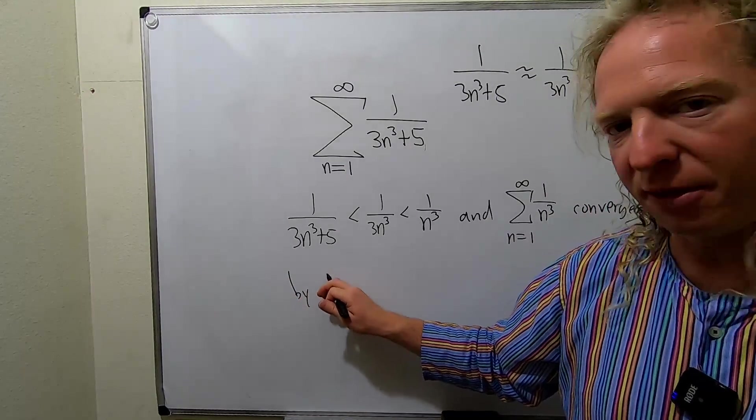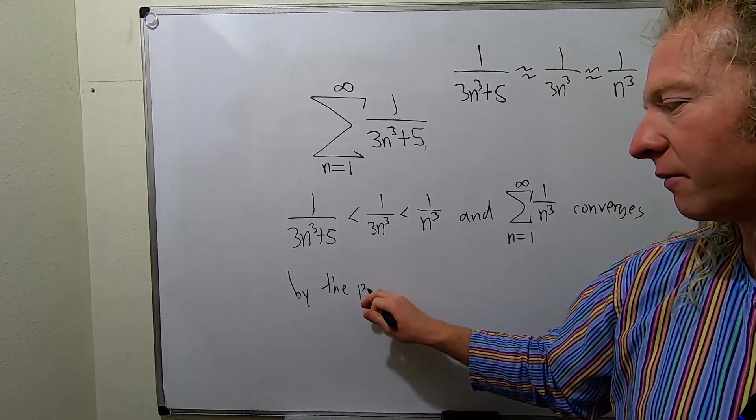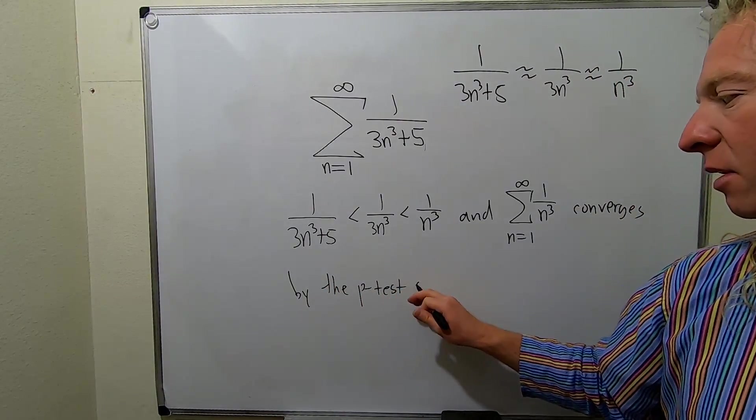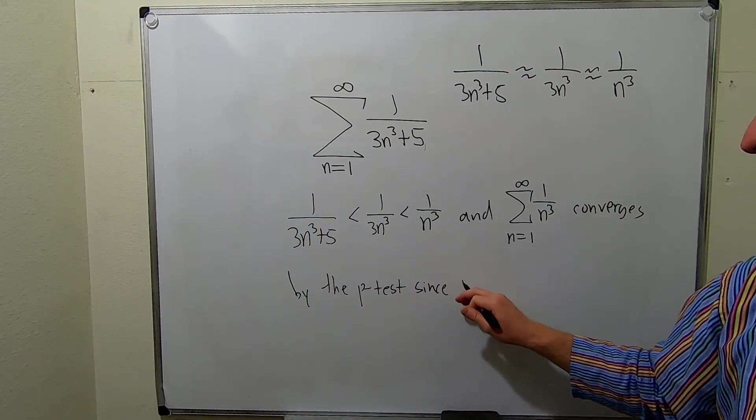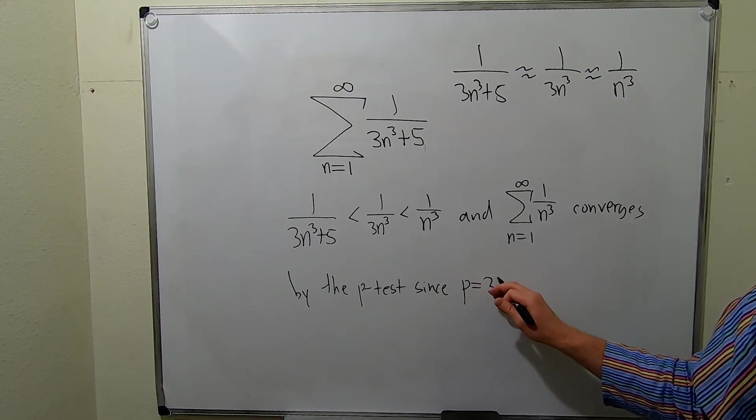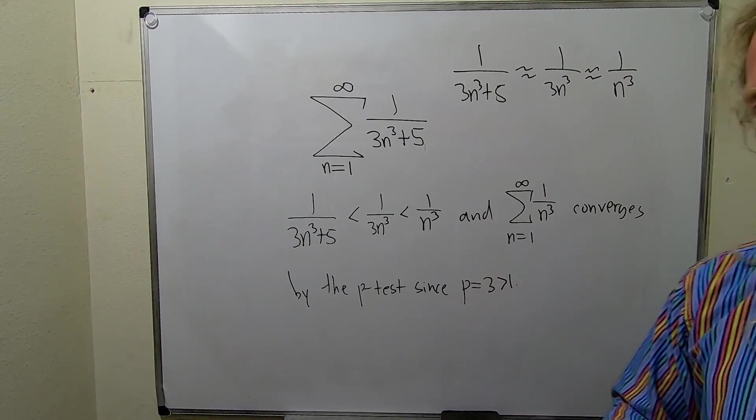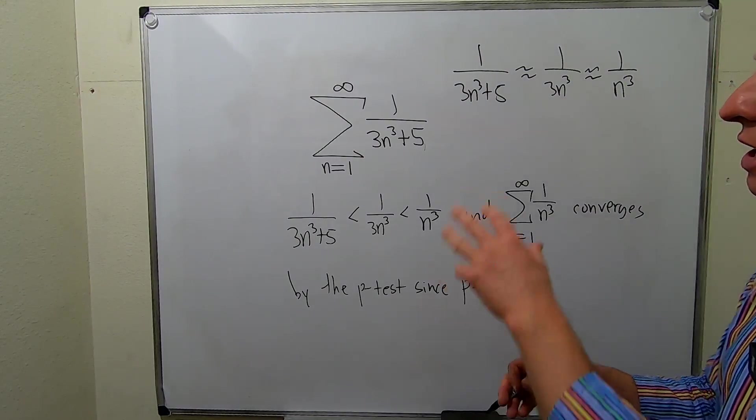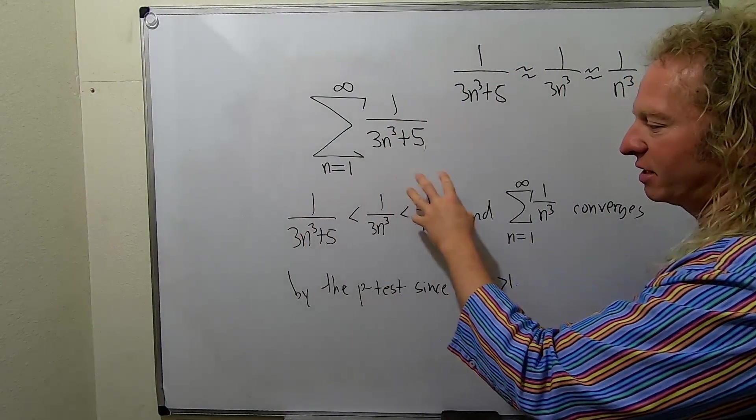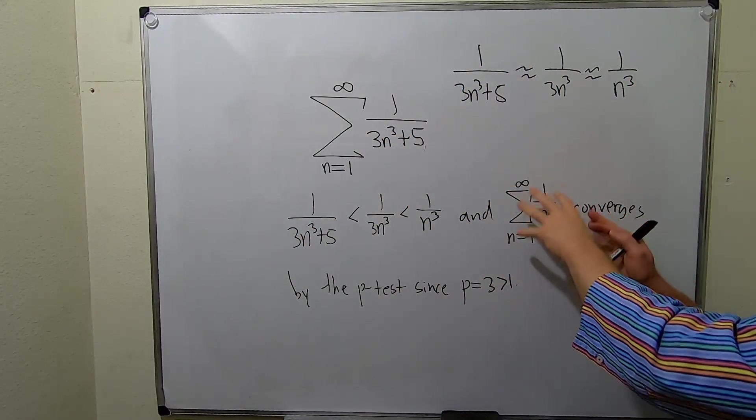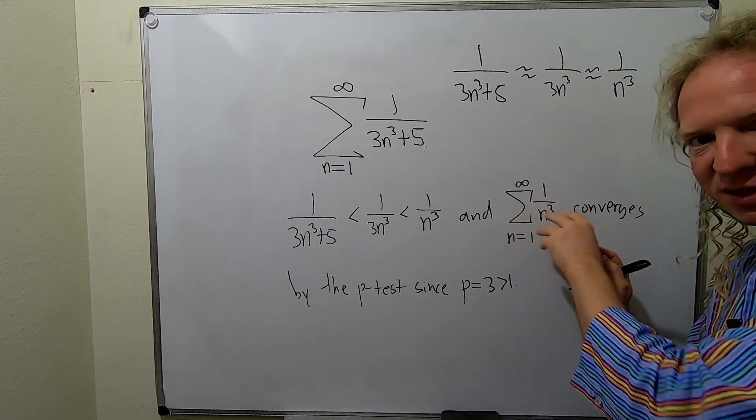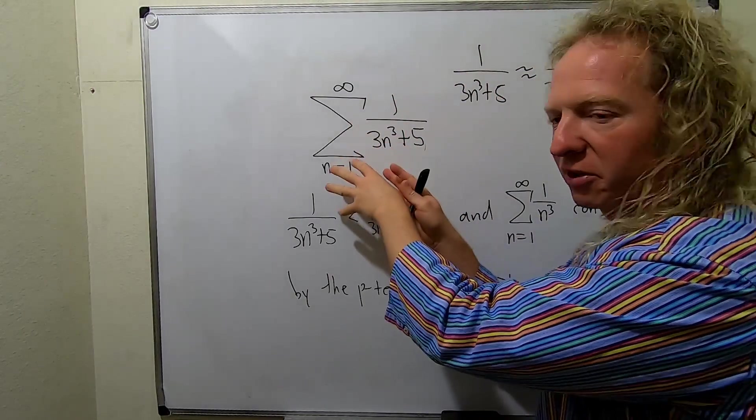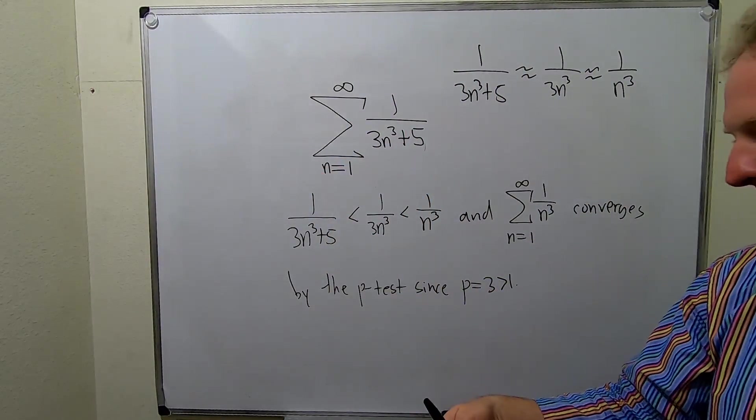By the p-test, since p equals 3, which is bigger than 1, we've satisfied the conditions of the direct comparison test. We have that this is less than this and this is a convergent series. Therefore this is also a convergent series by the direct comparison test.